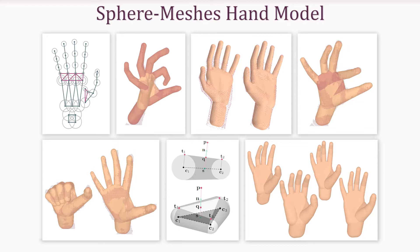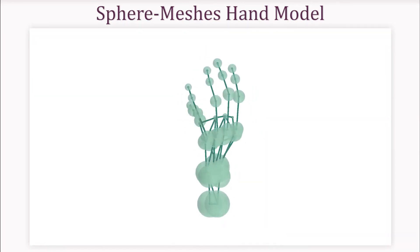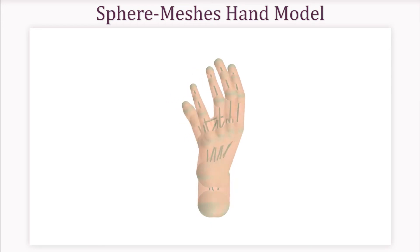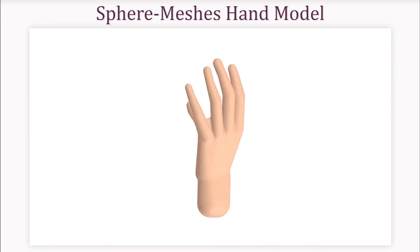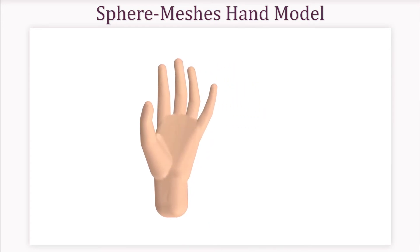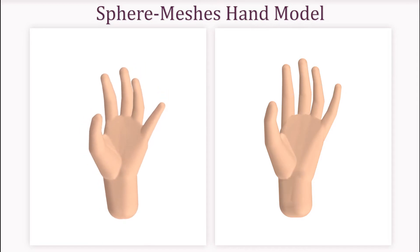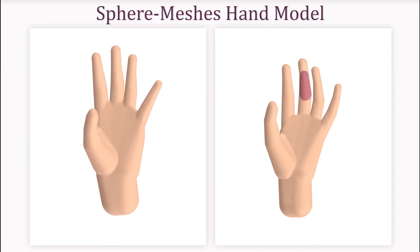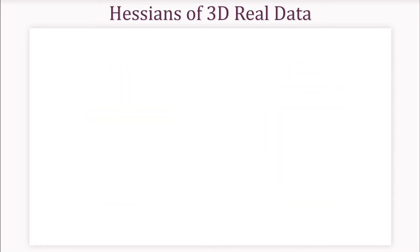We approach generative tracking by using a sphere mesh as a geometric representation of human hands. Sphere meshes consist of a skeletal graph with sphere radii defined at each vertex. These models are well suited to compactly represent human hands.